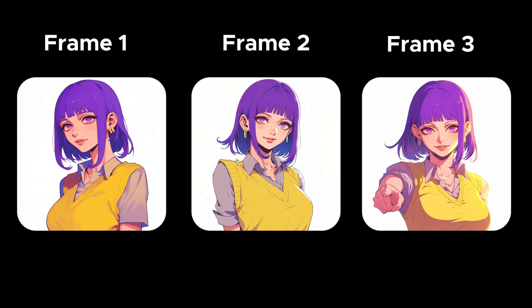The first step of the animation process is to create a sequence of keyframes, which are pictures of the same character in different poses. We'll then use an AI video generator to fill in the animation that's in between the different keyframes.